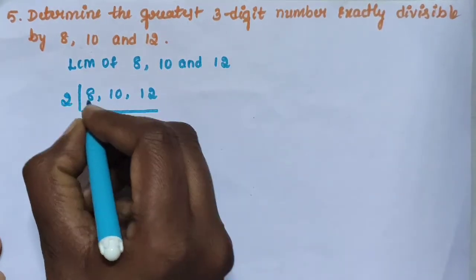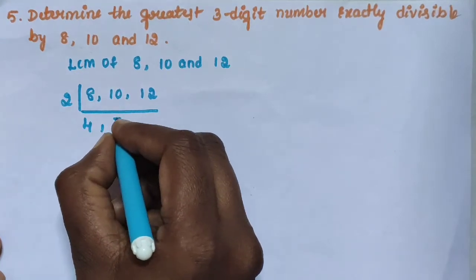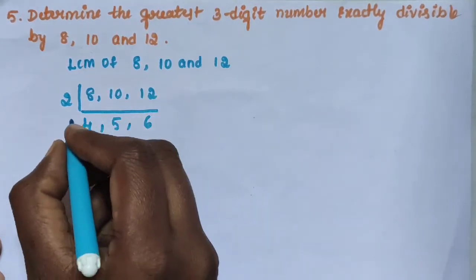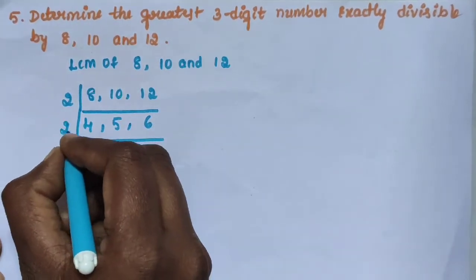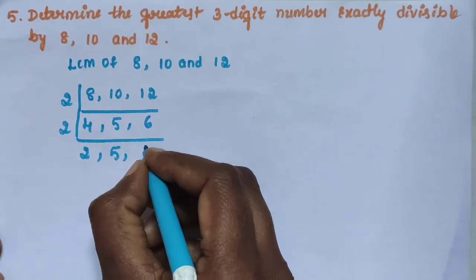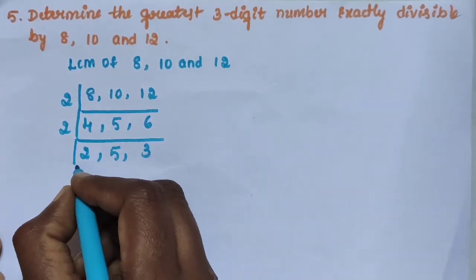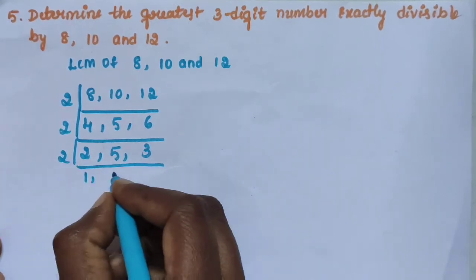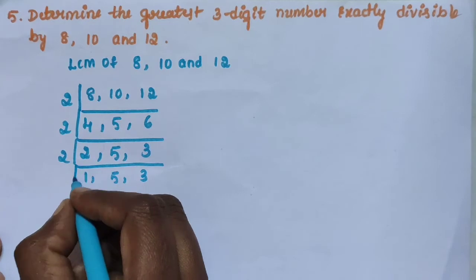First you take 2: 2 fours are 8, 2 fives are 10, 2 sixes are 12. Next you take 2: 2 twos are 4, 5 as it is, 2 threes are 6. Next you take 2: 2 ones are 2, 5 as it is, 3 as it is.